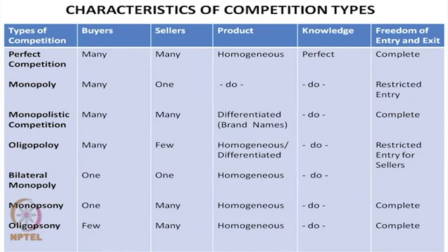The next type of competition is oligopoly. In the case of oligopoly we have many buyers but only 2 or 3 sellers. The product could be homogeneous or could be differentiated. Entry is mostly restricted because there are only a few sellers — so there is restricted entry for sellers.